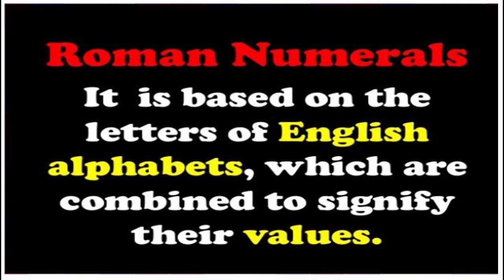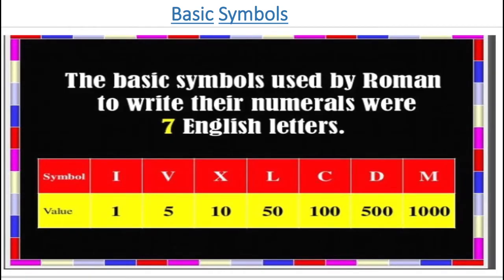Roman numerals are a system of numerical notation used by Romans. They are an additive and subtractive system in which letters are used to denote certain base numbers, and arbitrary numbers are then denoted using a combination of symbols. The basic symbols used by Romans were seven English letters: I represents 1, V represents 5, X represents 10, L represents 50, C represents 100, D represents 500, and M represents 1000.